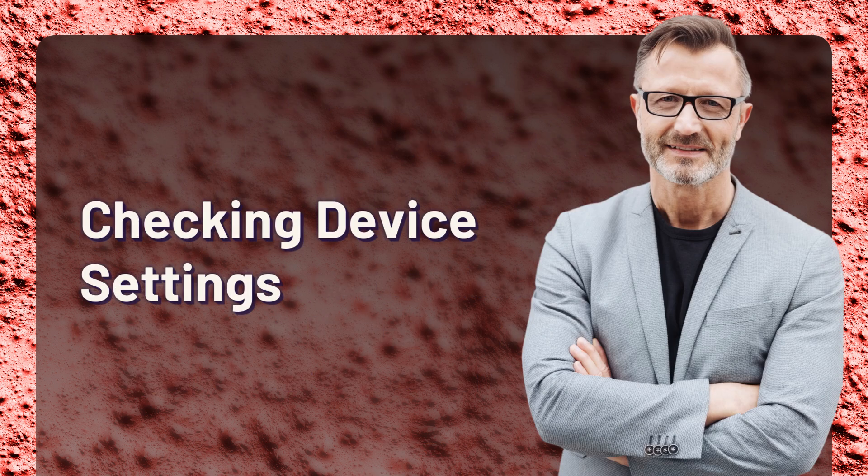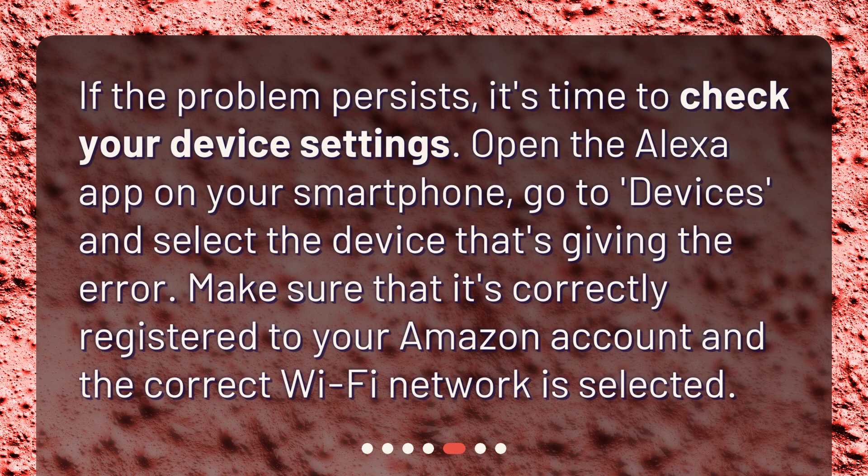Checking Device Settings. If the problem persists, it's time to check your device settings. Open the Alexa app on your smartphone, go to Devices, and select the device that's giving the error. Make sure that it's correctly registered to your Amazon account and the correct Wi-Fi network is selected.